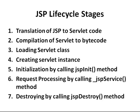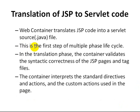Stage 1 is translation of JSP to servlet code. The web container translates the JSP code into a servlet source file. The web container is nothing but a server like Tomcat, Jetty, GlassFish, etc. This is the first step of the multi-phase lifecycle. In this translation phase, the container validates the syntactic correctness of the JSP page and tag files, and interprets the standard directives, actions, and custom actions used in the pages.